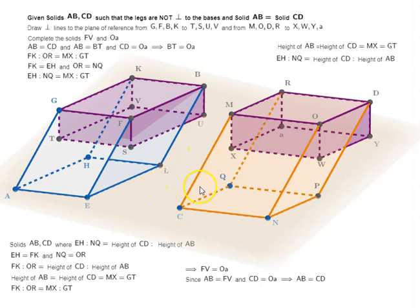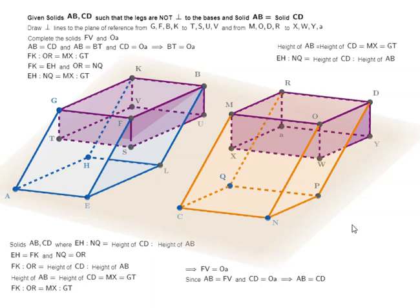So again, when the legs are not perpendicular to their bases, we have shown that if the bases are reciprocally proportional to their heights, then the solids are equal. That is Proposition 34 of Book 11 of Euclid's Elements. There is a link to a PDF book which describes all these propositions in detail — please feel free to download and refer to it.